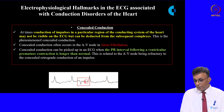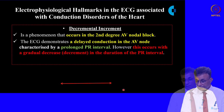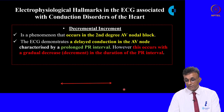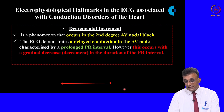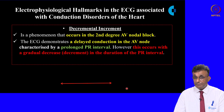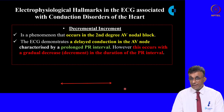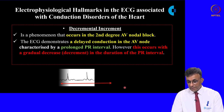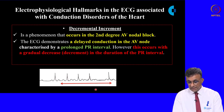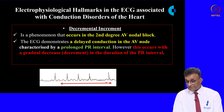Decremental increment is noted in second-degree AV nodal block. There is a delay in conduction of impulses at the AV node — the PR interval is initially widened but gradually narrows down, hence the term decremental increment. This tracing shows the PR interval initially increased and then tending to narrow.